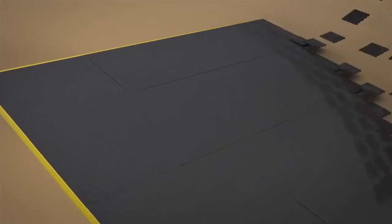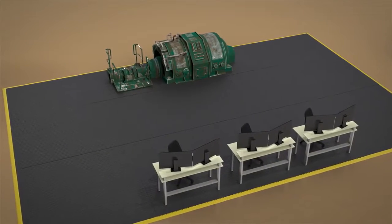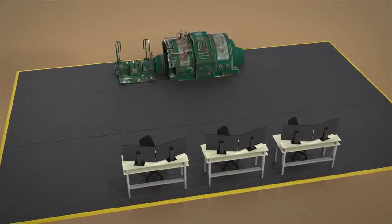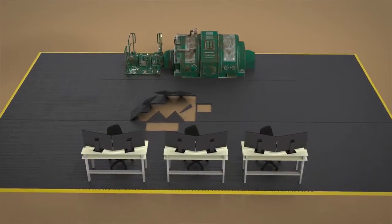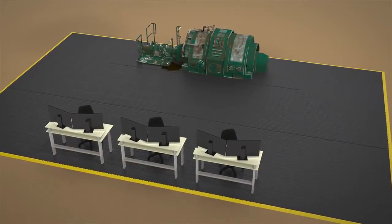Safety edging is required where there is traffic on and off the mats. Tiles can be easily reconfigured as processes change. Damaged matting is repaired by replacing only the damaged tiles, protecting your original investment.